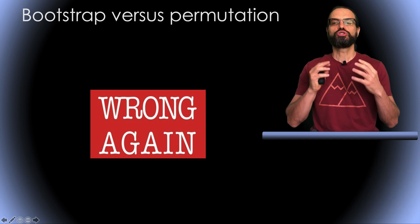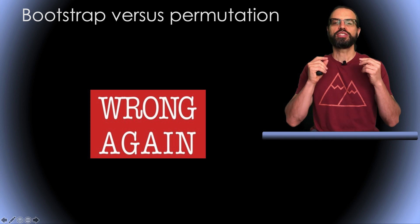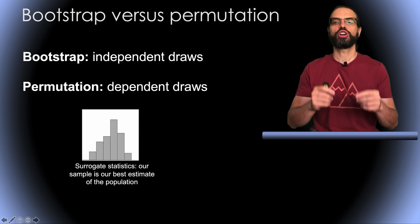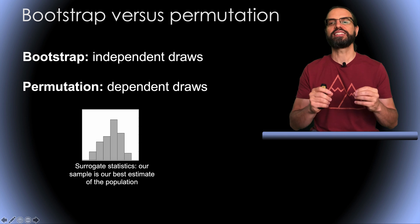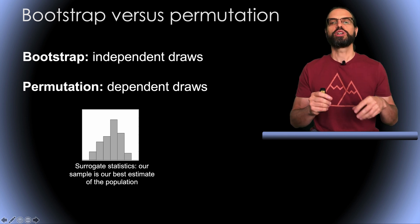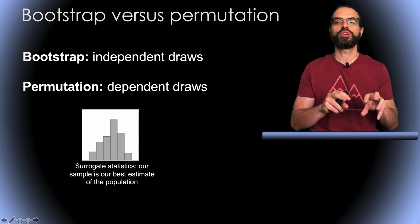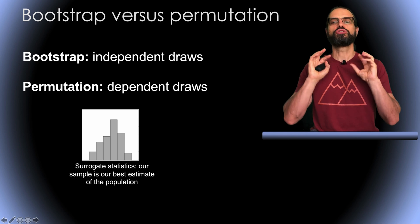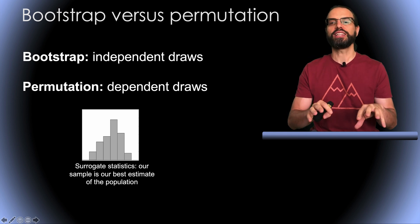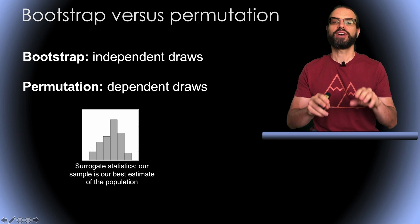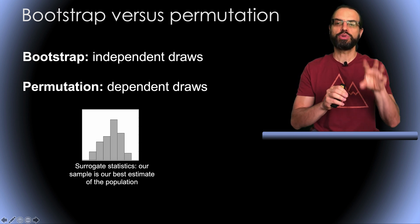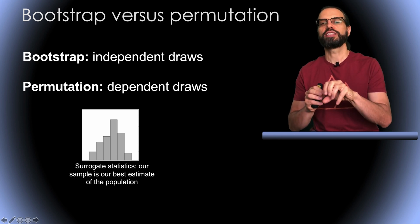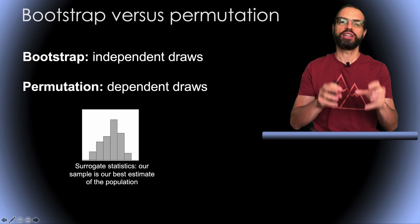So why is bootstrap more statistically sound? The assumption for using surrogate statistics is that the current sample is the best estimate of your population. When you're drawing subjects from your population, you want the draws to be independent. So this is the case with bootstrap because you're drawing values with replacement. Each value we draw, we put back in the bucket so we might draw it again and each draw is independent.